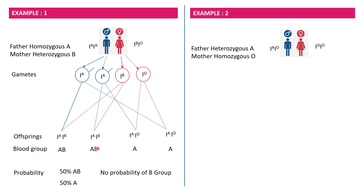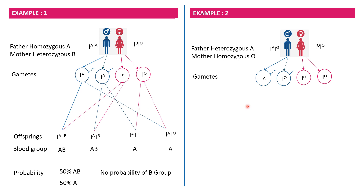In example two, the father is heterozygous A with genotype IAIO, and the mother is homozygous O with genotype IOIO. O is always homozygous because O is a recessive gene. For those who get confused by crisscross inheritance patterns, you can demonstrate mating through a checkered box known as the Punnett square, where male and female gametes are shown on the sides outside the box.